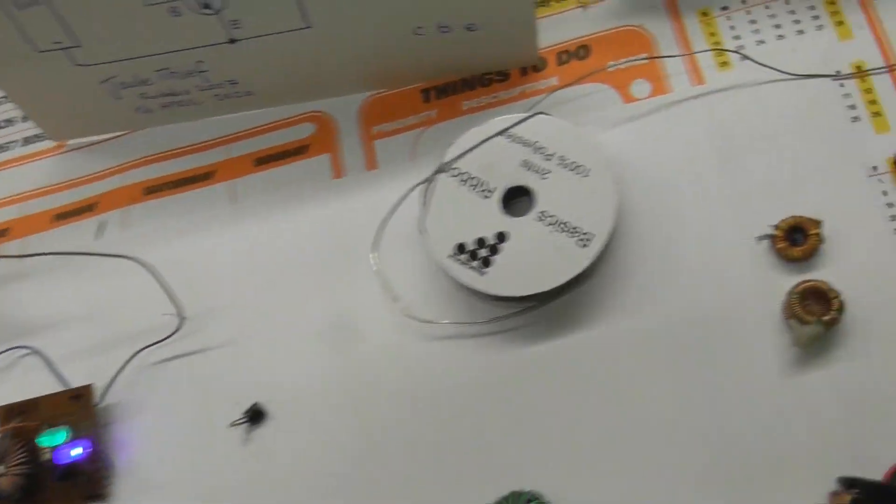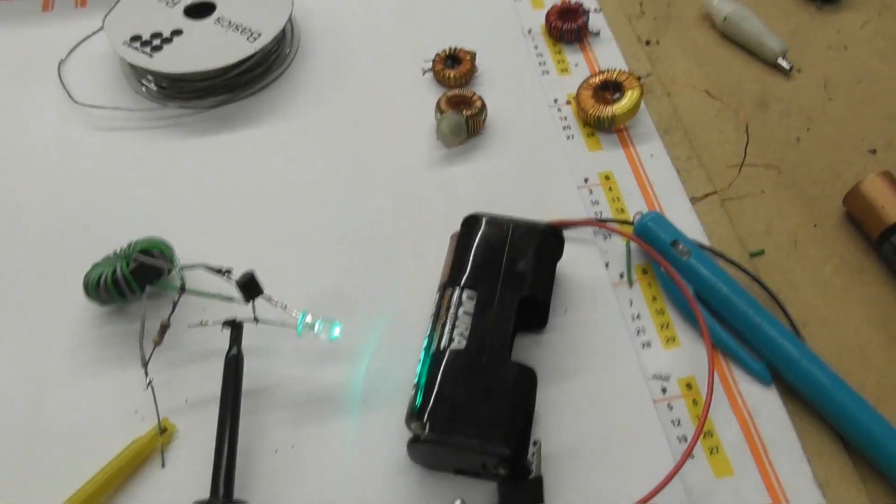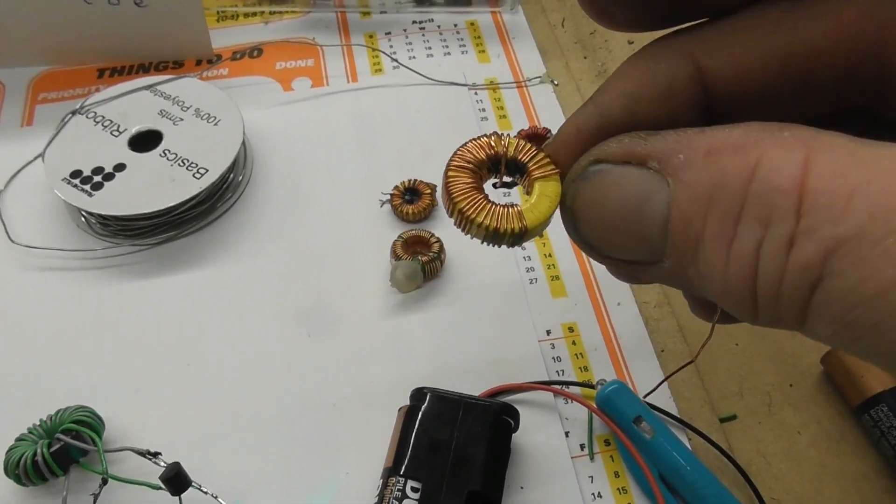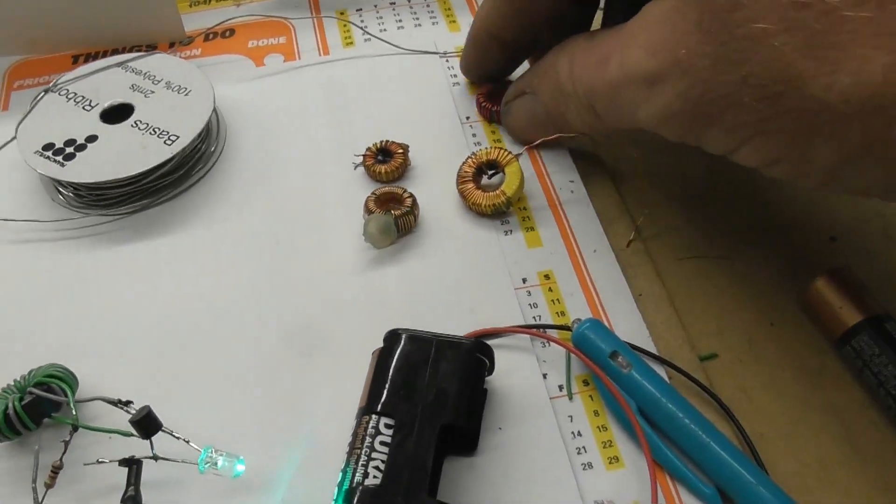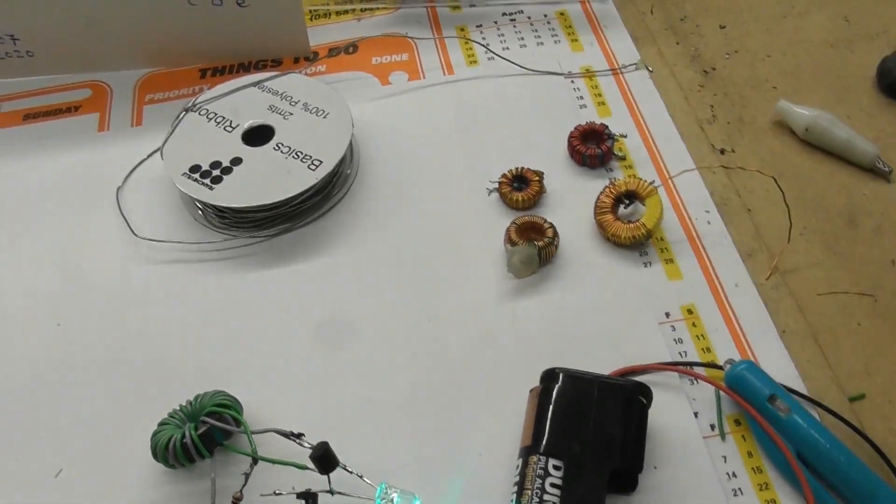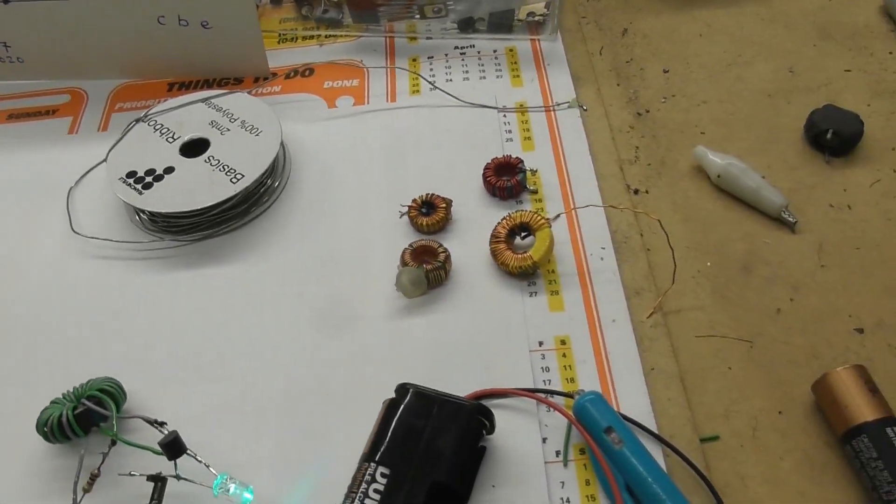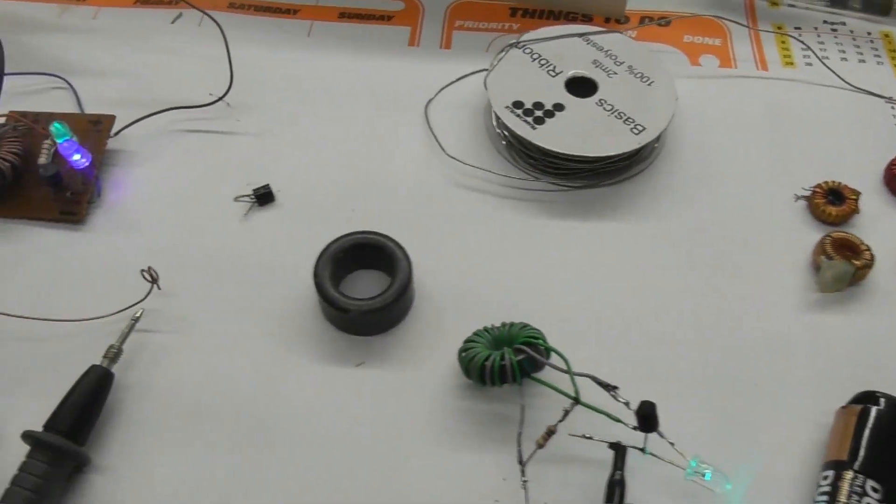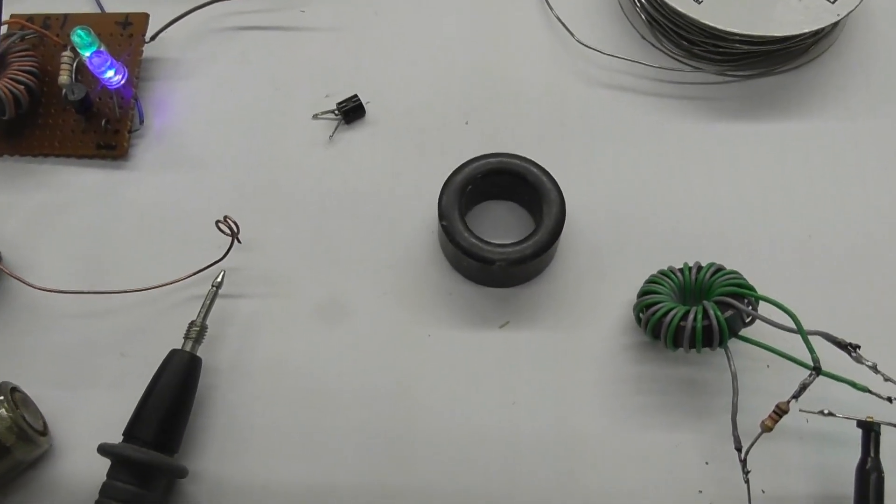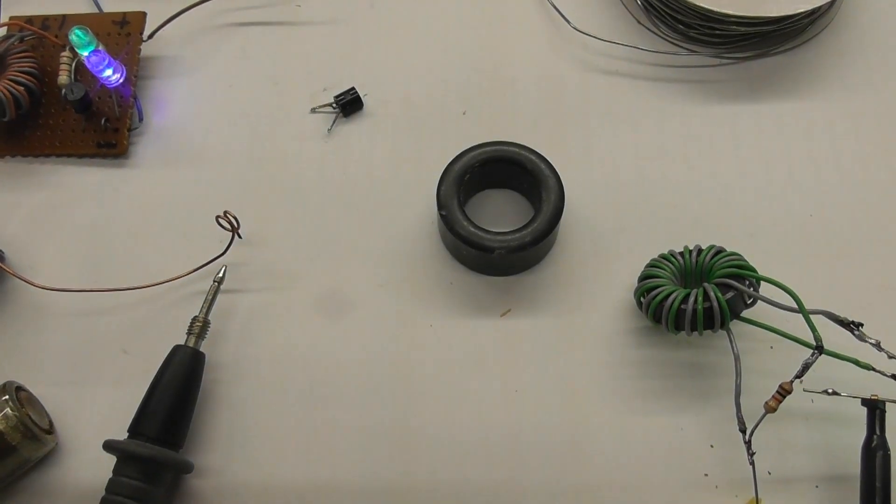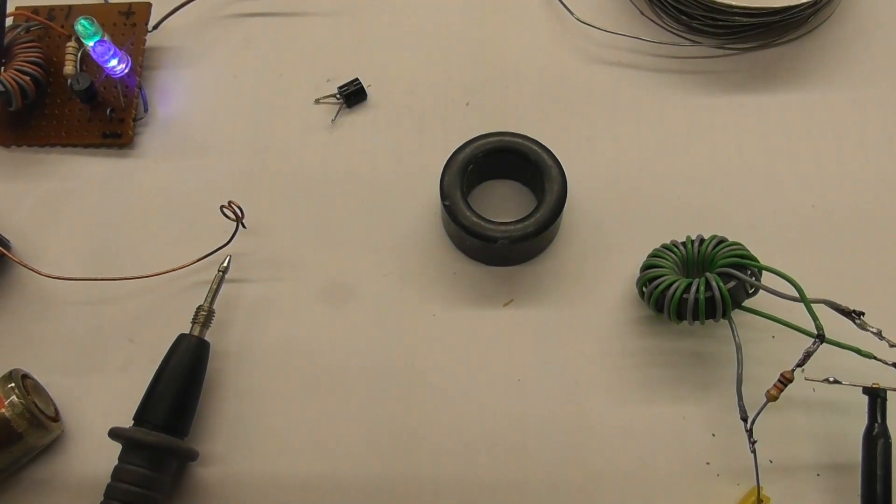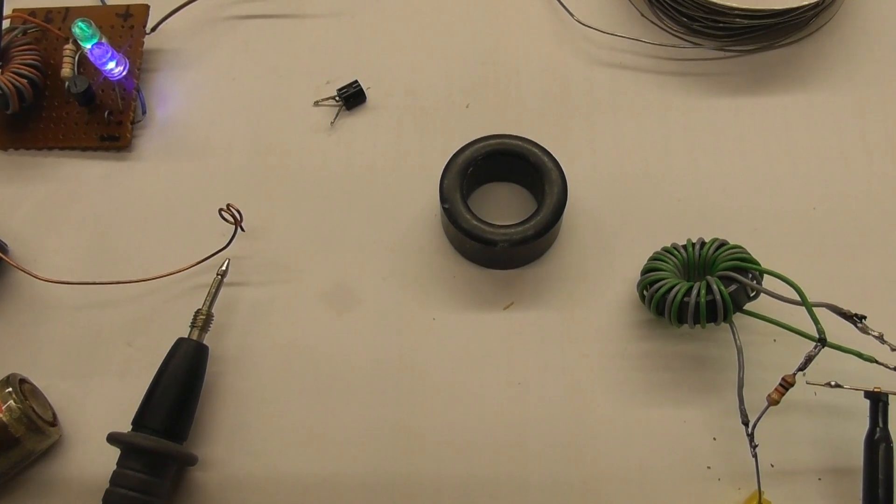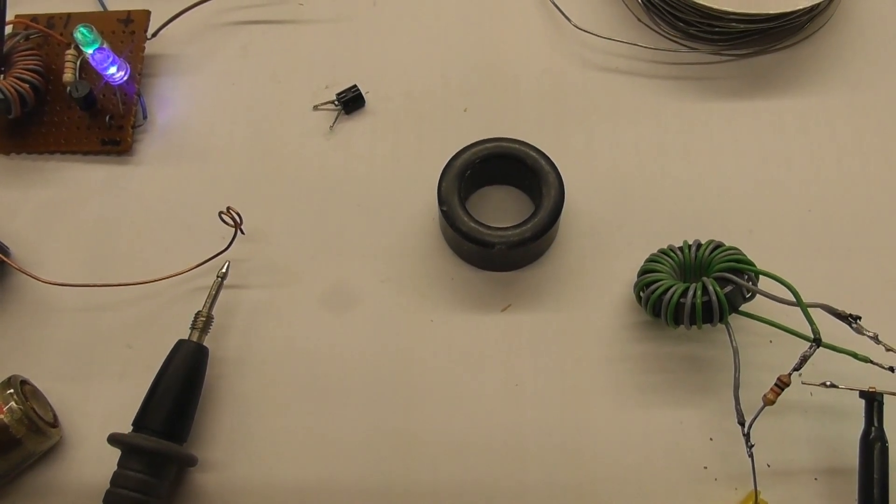So there we go with the Joule Thief. These little coils are easy to obtain - you can take them out of circuit boards, television sets, or you can purchase some from a shop like Jaycar or whatever. That's a bit bigger one. I'll show you how to wind the coil or put the windings in. I'll show you a couple of steps.